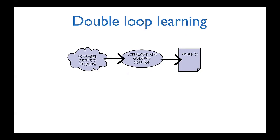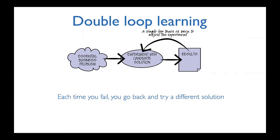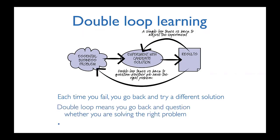Double loop learning says: instead of just trying a different solution, go back and question the problem itself. Ask: has it not worked because we came up with the wrong solution, or have we not understood the problem? By not understanding the problem, we haven't been able to produce a solution that's going to solve the customer's problem.